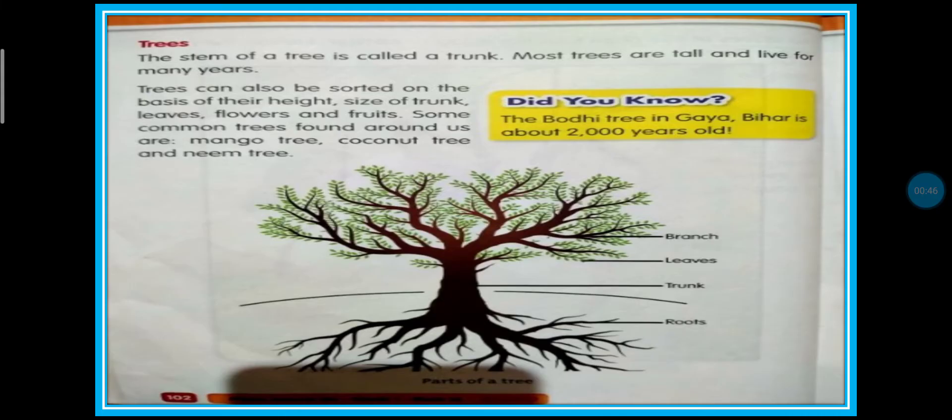Students, first we will read page number 102. So open your ABS content book. Trees. The stem of a tree is called a trunk. A tree ki stem ko trunk kehate hai. Yes, most trees are tall and live for many years.